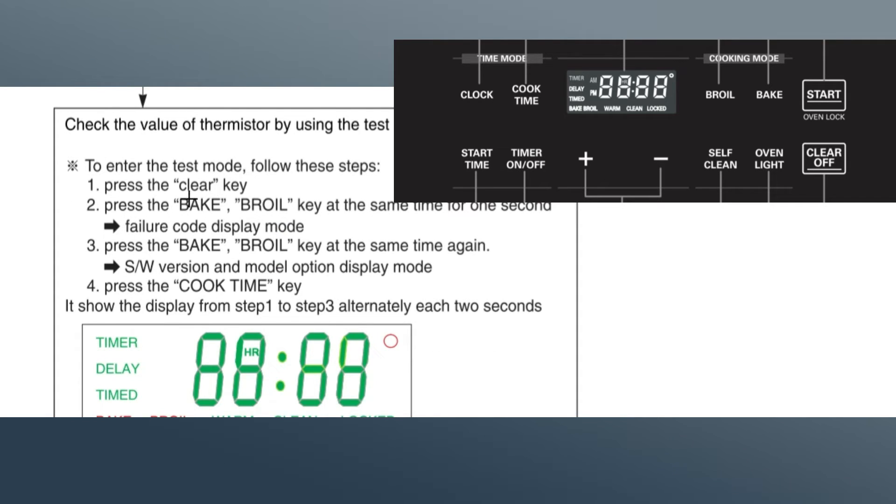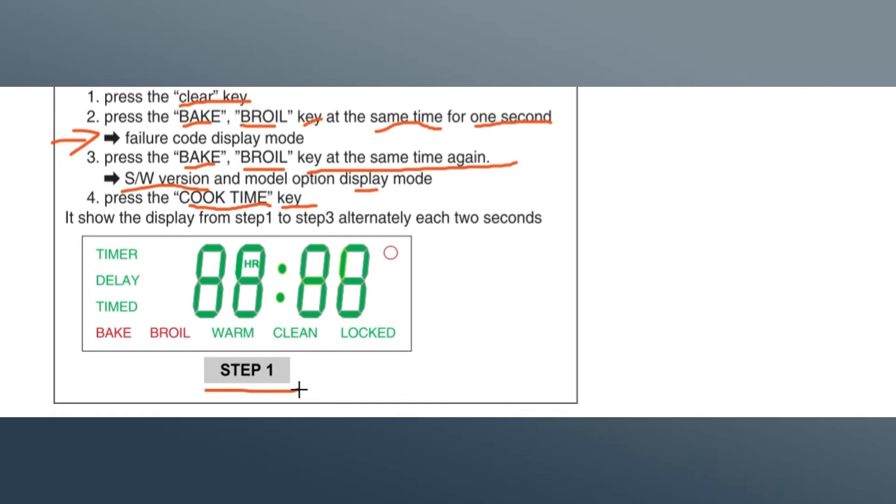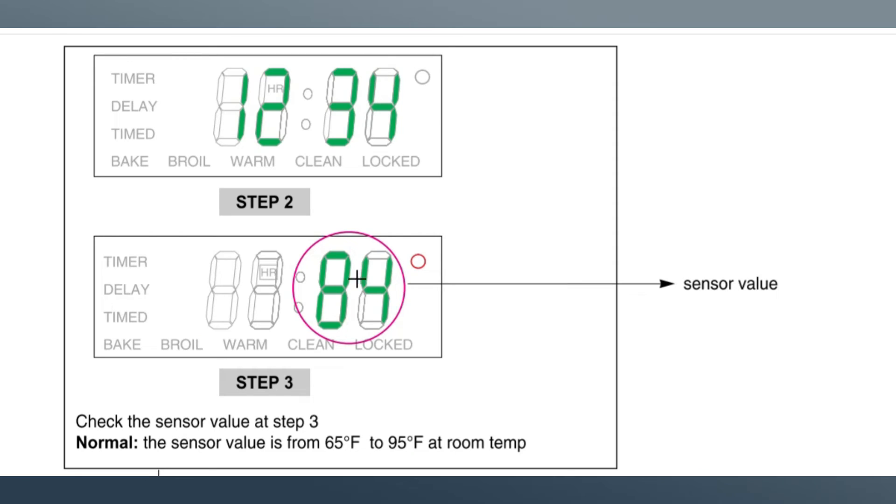So to enter this test mode, you're going to do the following steps. You're going to press the clear key button, then you will hold the bake and the broil key at the same time, one second. Then the fault code will appear. Then right away, you can hold the bake, the broil key at the same time again. Then the software version will appear in the display mode. Then you'll press the key time once. So from here, it'll be going back from step one, which is the display mode. Then we'll go to step three, which will show the temperature that the main control board recognizes.